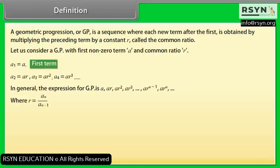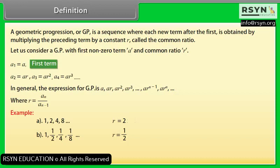Where R = Aₙ / Aₙ₋₁. Example: 1, 2, 4, 8, and so on — R = 2. Example: 1, 1/2, 1/4, 1/8, and so on — R = 1/2. Example: 1/4, −1/2, 1, −2, 4, and so on — R = −2.